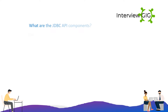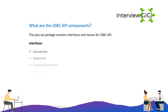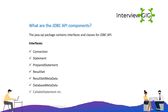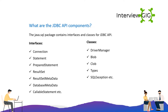What are the JDBC API components? The java.sql package contains interfaces and classes for JDBC API. Interfaces include: Connection, Statement, PreparedStatement, ResultSet, ResultSetMetaData, DatabaseMetaData, and CallableStatement. Classes include: DriverManager, Blob, Clob, Types, and SQLException.